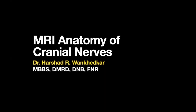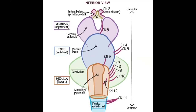For the next 15 minutes we will be talking about MRI anatomy of the cranial nerves. This is a simplified overview showing the cranial nerves from superior to inferior, except the first and the twelfth cranial nerves.